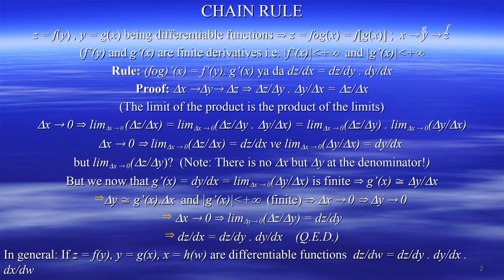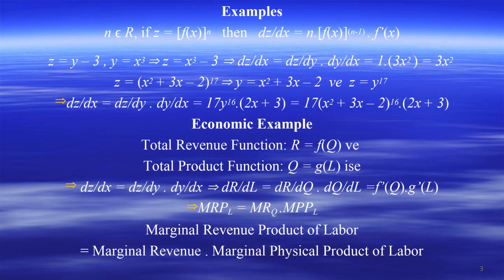The chain rule is perhaps the rule we use most in mathematics. We will use it even without saying its name, but it should become automatic. Otherwise you will make many errors in computing derivatives — in almost all derivatives we will need this chain rule.